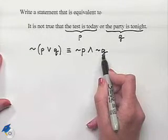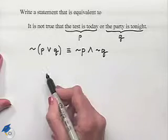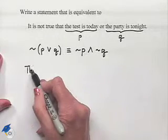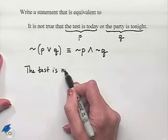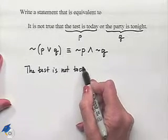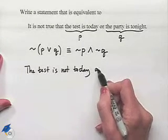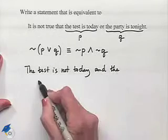Now let's rewrite this in its English format. It would read: the test is not today and the party is not tonight.